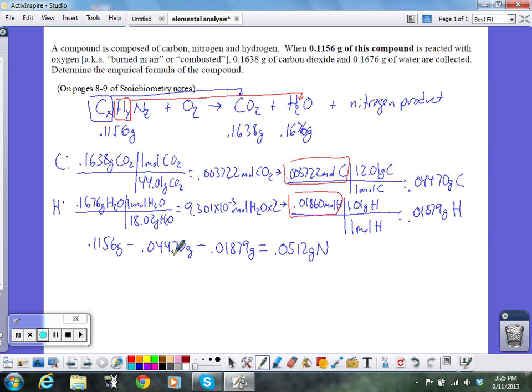And now to get the formula again, I need mole ratio. So now I need my moles of nitrogen. So one mole of nitrogen is 14.01 grams of nitrogen. So when I do that, that tells me that there's 0.003720 moles of nitrogen. So that's the last number I need to do my mole ratio.